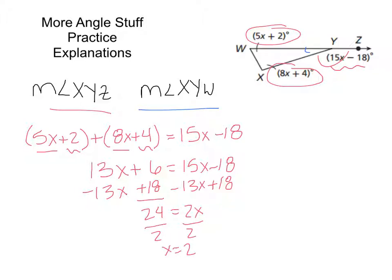Which is all fine and good, but that's not really what we're trying to find. We actually have to find the measure of angle XYZ. We know that angle XYZ is equal to 15 times x minus 18. We know that x is 12, so we can plug that 12 in. We can do some algebra, and we are going to end up with the measure of angle XYZ being 180 minus 18, which is 162.